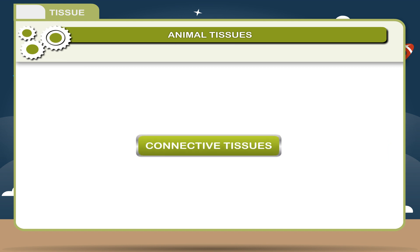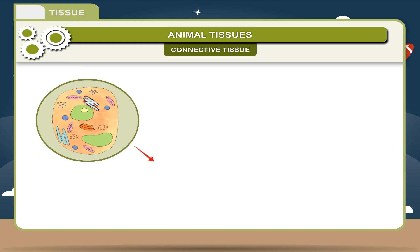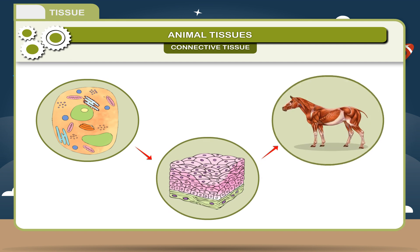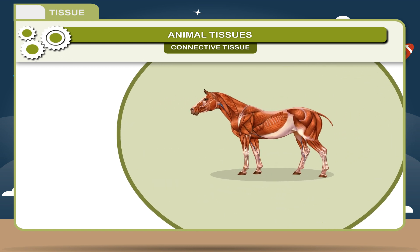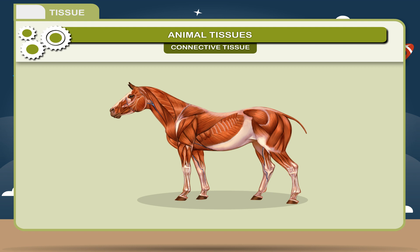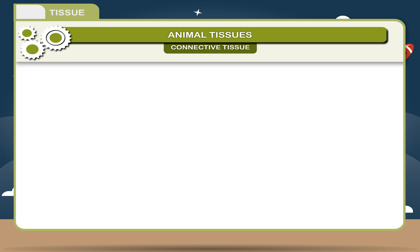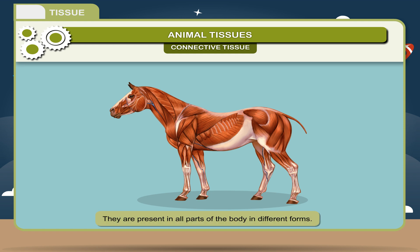Connective tissue: The cells of this type of tissue are composed of different materials. The various organs of the body are connected with one another by connective tissues. Location: They are present in all parts of the body in different forms.